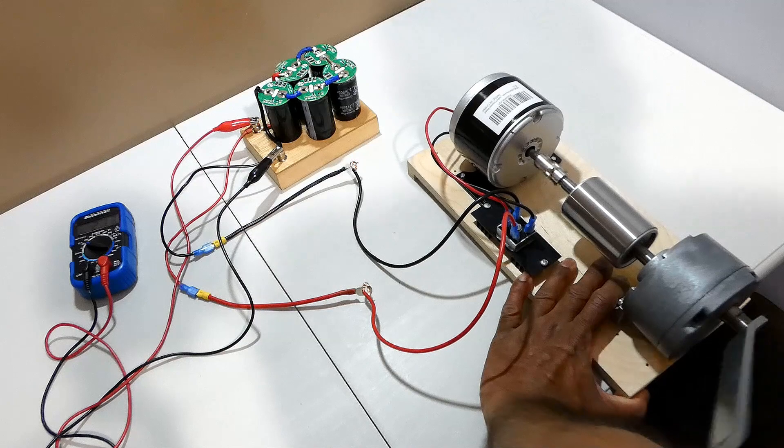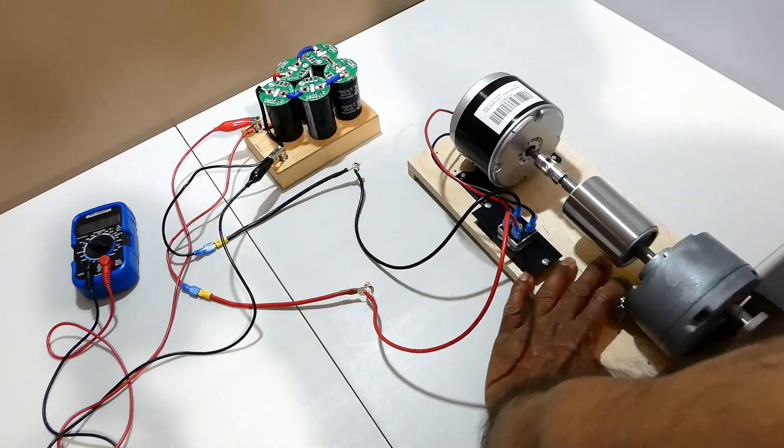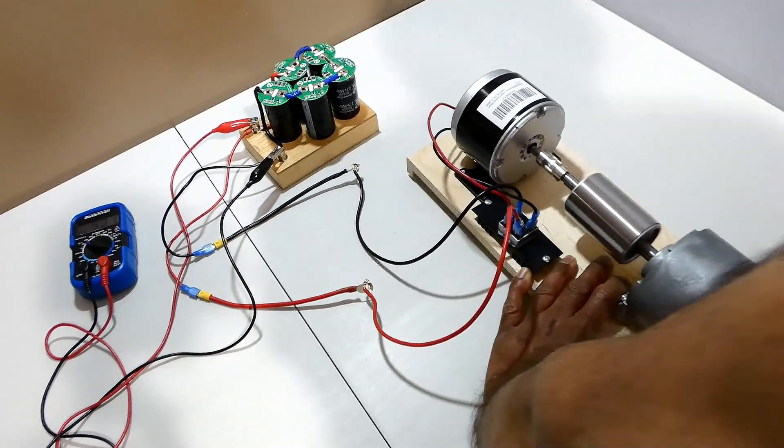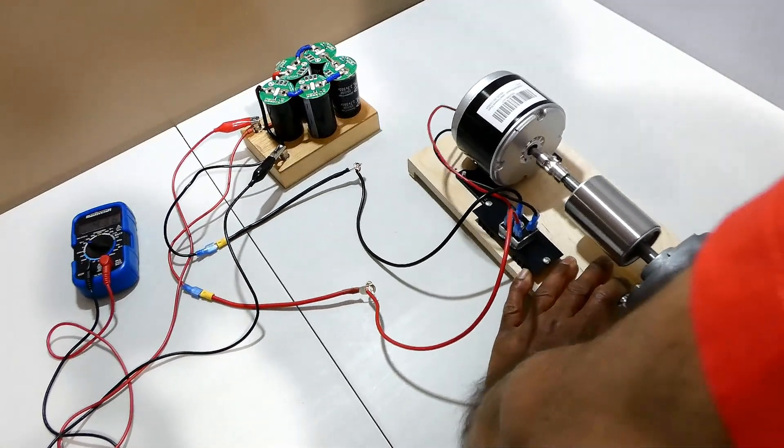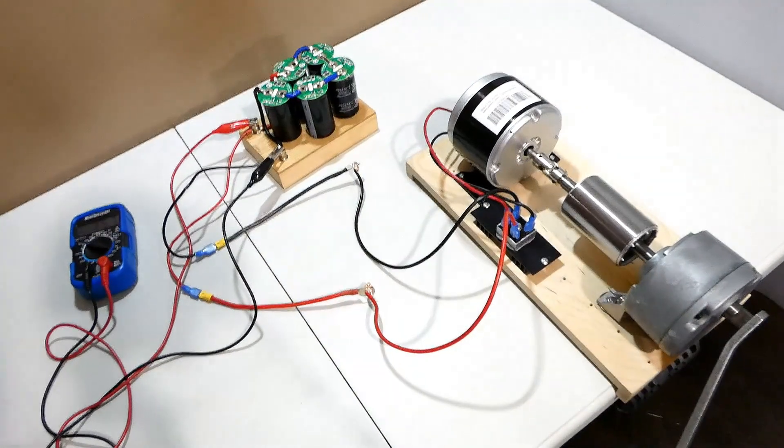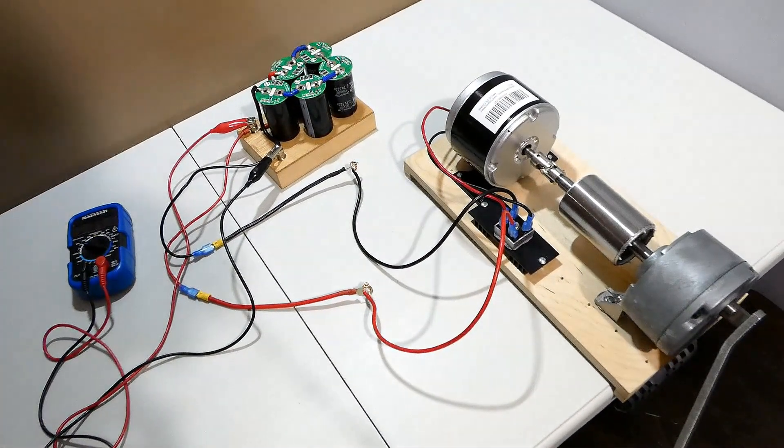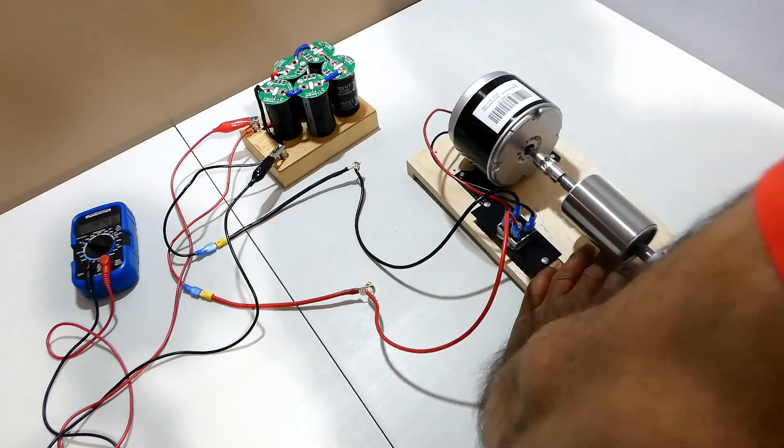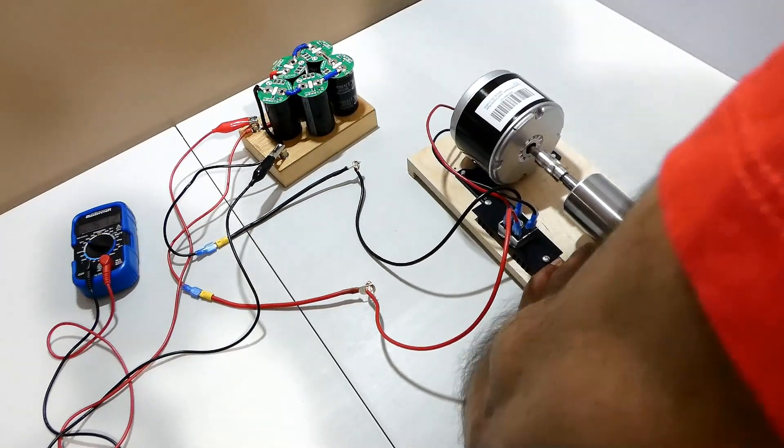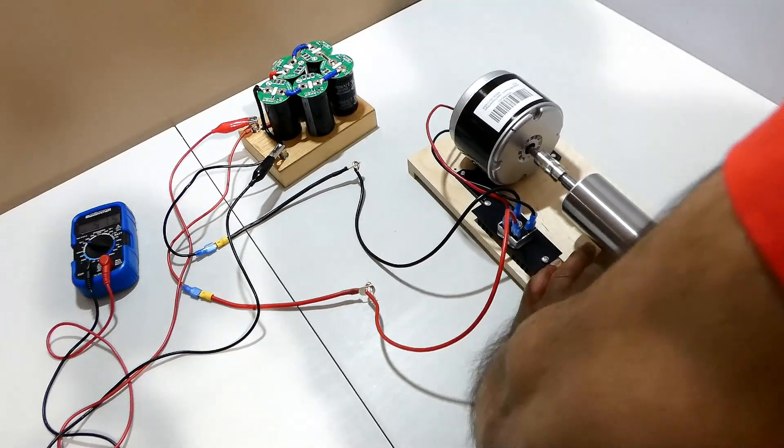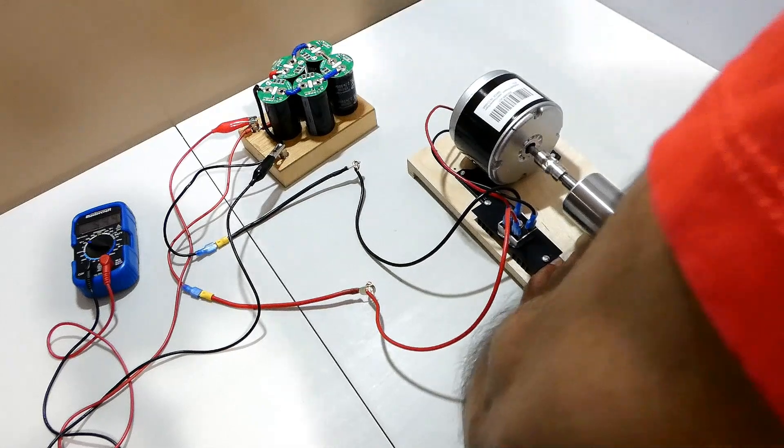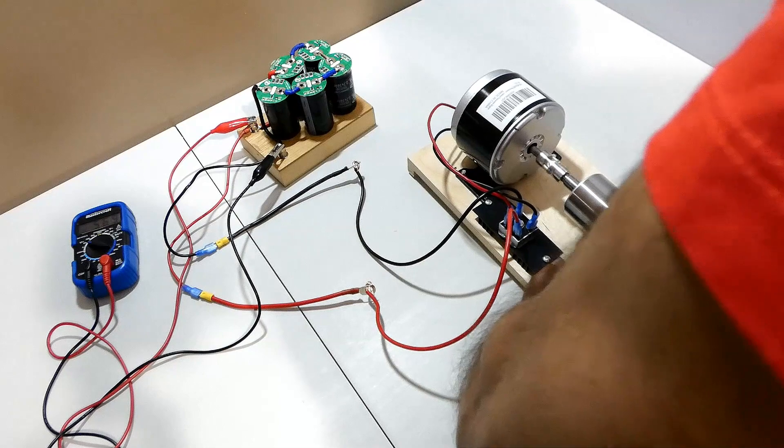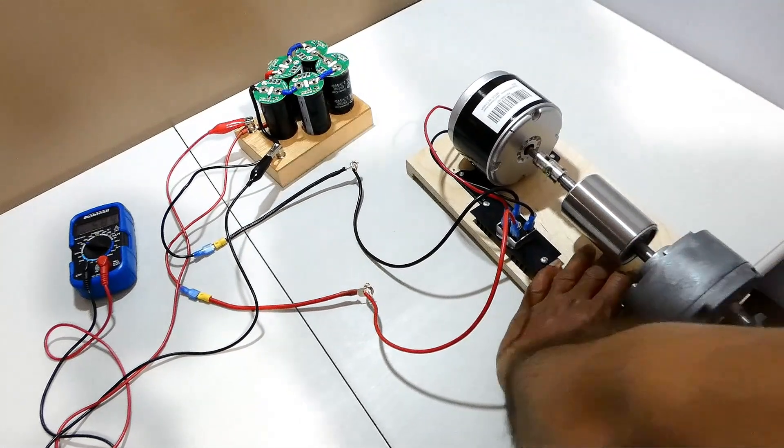Now I'm using the bridge rectifier in between the hand crank generator and the supercapacitor power bank. The power cannot backflow from the supercapacitor. Let's see how much voltage I can charge on the supercapacitors.